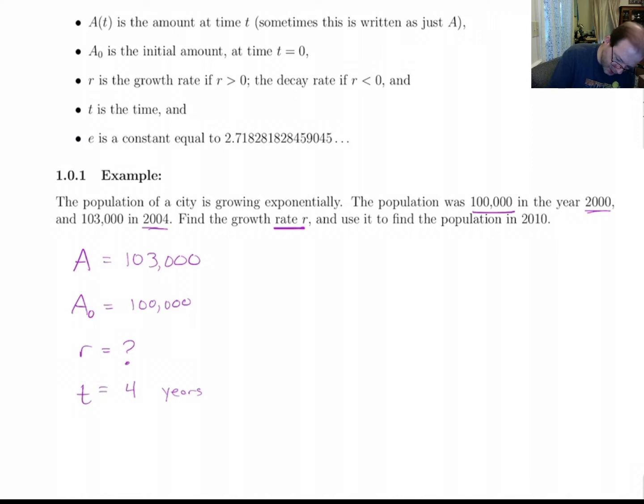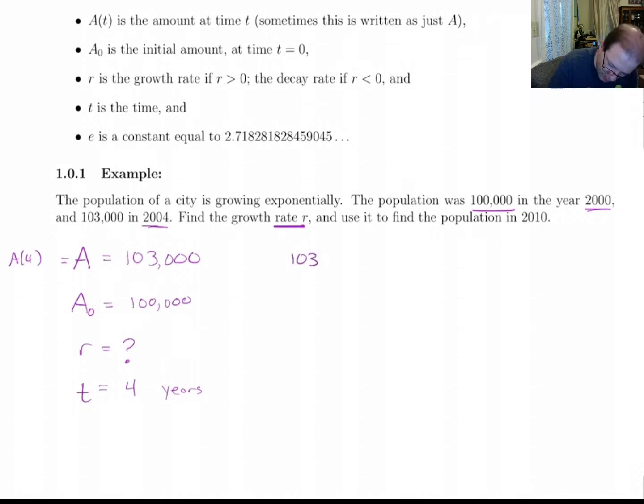So this A up here, I could have also called this A of 4 if we wanted to. So we just need to put all this into our equation and solve. So we get 103,000 equals 100,000 E to the 4r. And now this is an easy equation to solve. Divide both sides by 100,000, you get 1.03 equals E to the 4r.